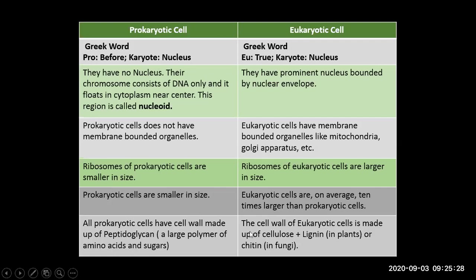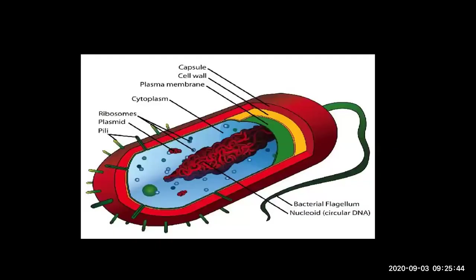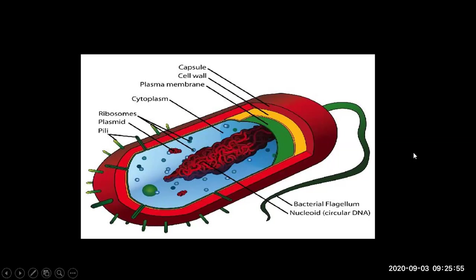So eukaryotic cell wall is made up of different chemicals, and prokaryotic cell wall is made up of different chemicals. This is all about the difference between prokaryotic and eukaryotic cells. I must also tell you the diagram of a prokaryotic cell. When you have a question, you have to make diagrams of a bacterial cell and a eukaryotic cell as well.